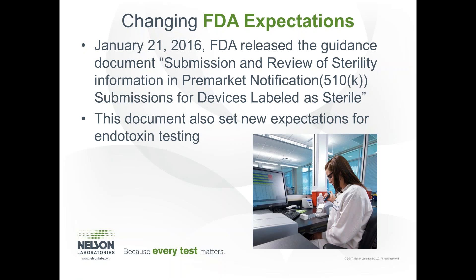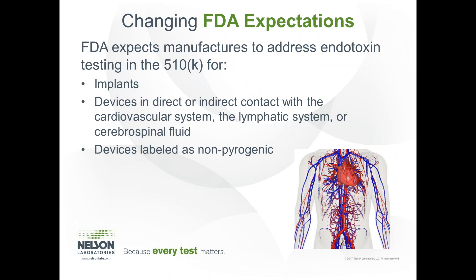There are a few things that are changing in the industry. As of January 2016, FDA released the guidance document, 'Submission and Review of Sterility Information for Premarket Notification 510(k) Submissions for Devices Labeled as Sterile.' This document caught many manufacturers off guard because, even though it was for devices labeled as sterile, it set new expectations for endotoxin testing. This was particularly impactful to implant manufacturers, as historically implants were exempt from USP 161. However, FDA now recognizes risk associated with that exemption and is requiring endotoxin testing for implants, in addition to devices in direct contact with the circulatory system, lymphatic system, or cerebral spinal fluid, and devices labeled as nonpyrogenic.